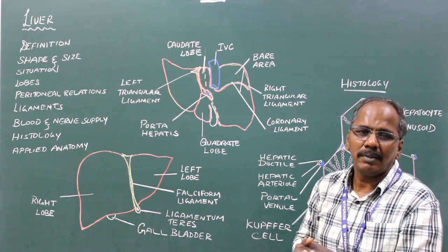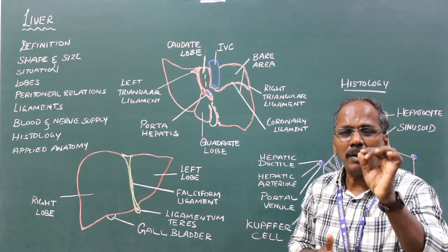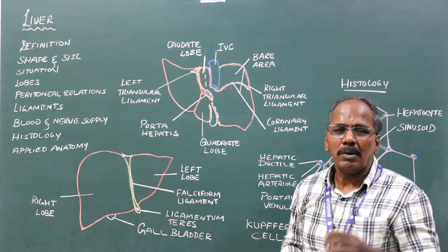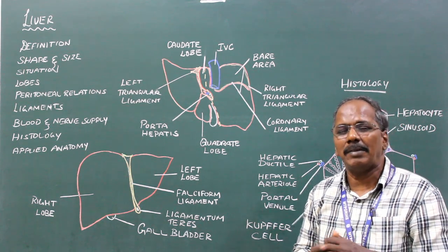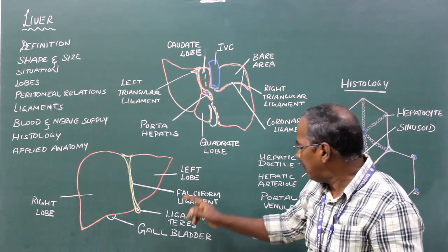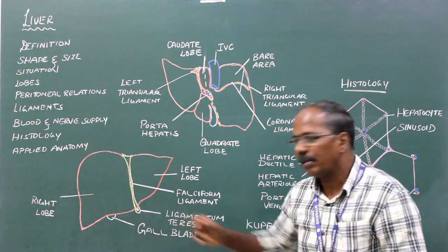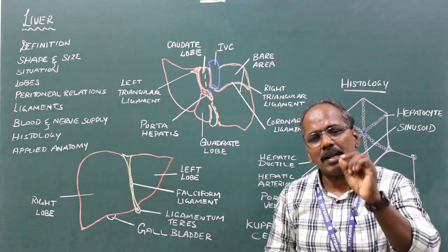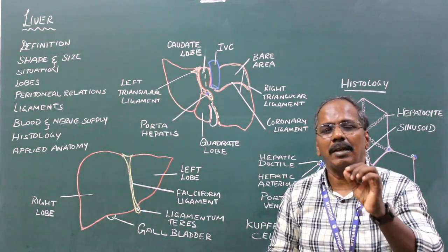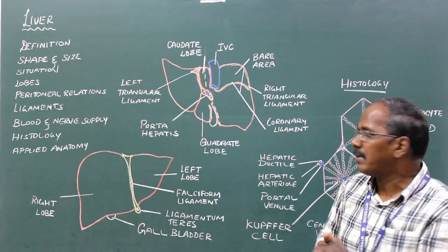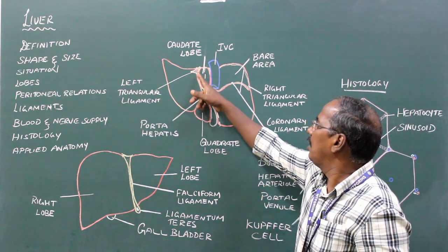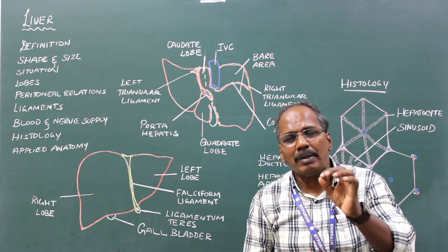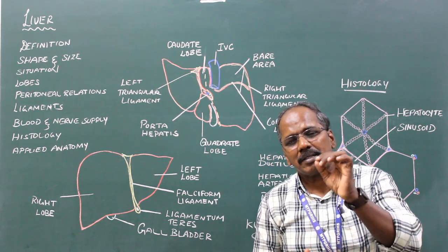Lesser omentum: it is a fold of peritoneum which stretches from the porta hepatis to the lesser curvature of the stomach. Ligamentum teres: it is the remnant of the obliterated left umbilical vein. Ligamentum venosum: it is the remnant of the obliterated ductus venosus.